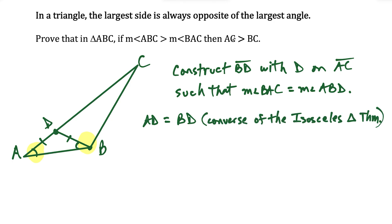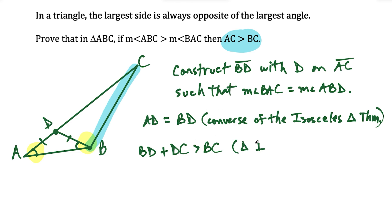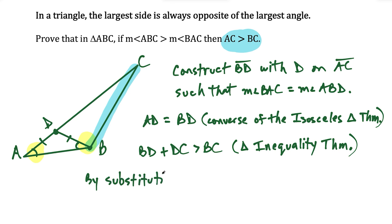Our goal is to create an inequality showing something greater than BC. I'm going to target side BC in triangle BDC and use the triangle inequality theorem: BD plus DC has to be greater than BC, because in any triangle the sum of any two sides must be greater than the third. Since AD equals BD, I'm going to substitute AD for BD, giving us AD plus DC is greater than BC.